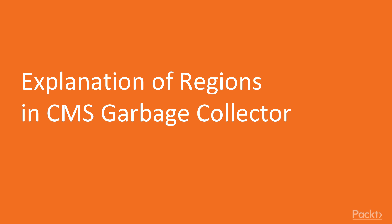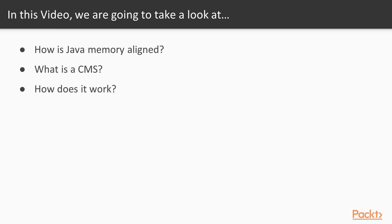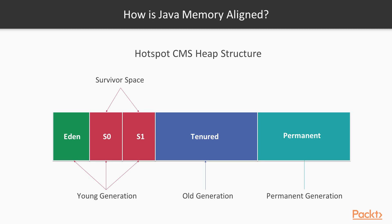This is the first video in which we'll explain regions in the CMS garbage collector. The first question we'll answer is how Java memory is aligned — this is very important to understand. Next, we'll understand what CMS is, and finally how this garbage collection works.